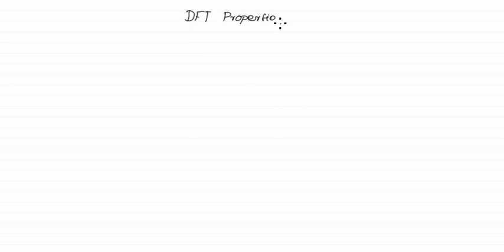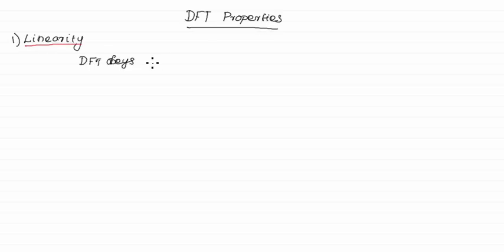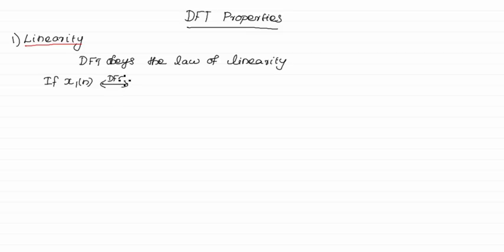DFT properties. Now we are going to see the properties of DFT and their proofs. First we will see the linearity property. DFT obeys the law of linearity. That is if x1(n) when taking an N-point DFT equals X1(k), and x2(n) when taking an N-point DFT equals X2(k).